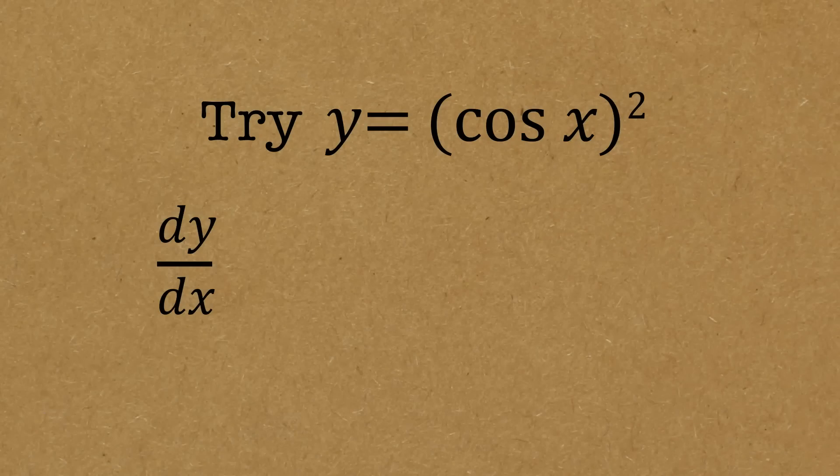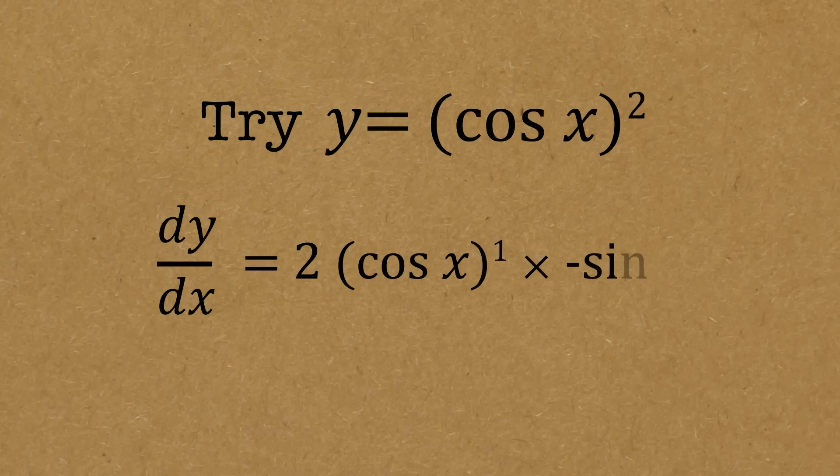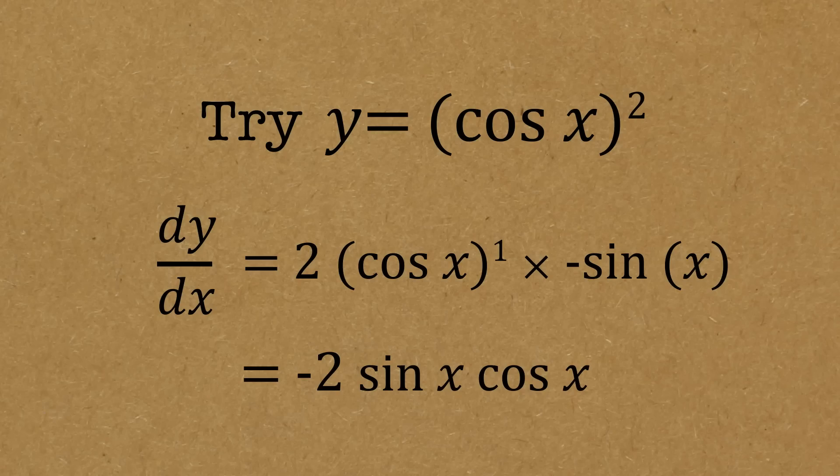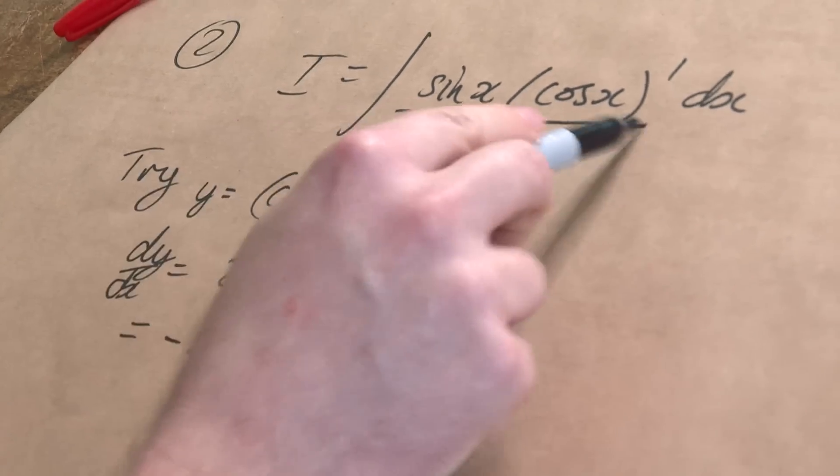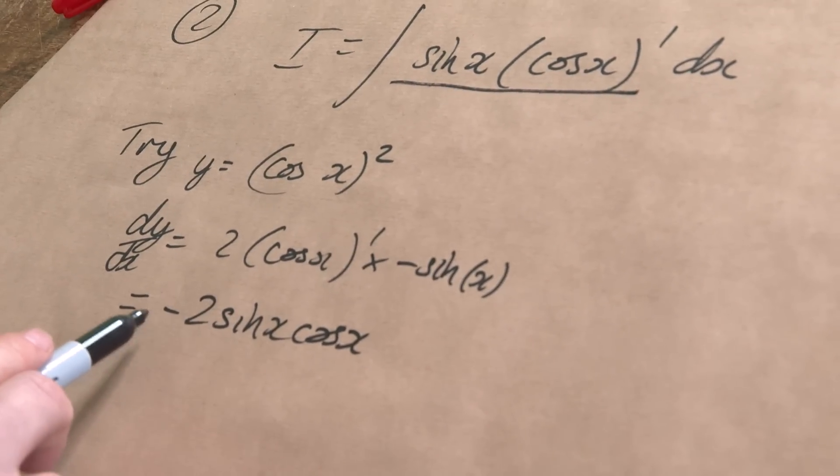So if you differentiate this one, the 2 comes down the front, and you get cosine x to the 1, and then you've got to do the chain rule, multiply the differential of the inside, so multiply that by negative sine x. Tidying that up, you get negative 2 sine x cos x, which I invite you to compare with our original thing. It's pretty close, it's just a negative 2 out.